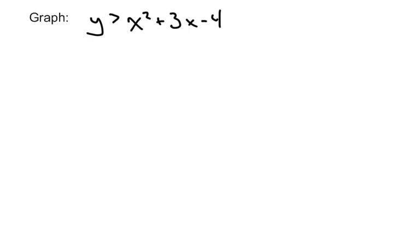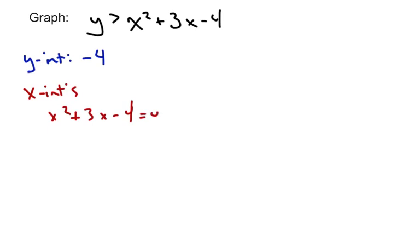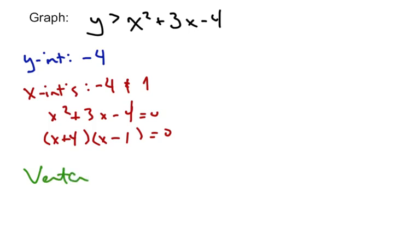One last thing: graphing an inequality. When we have y greater than x squared plus 3x minus 4, we've gone through finding what we need to graph. The y-intercept is obviously negative 4 — when it's in standard form it'll be the constant. To find the x-intercepts, we set x squared plus 3x minus 4 equal to 0 and solve it. This factors nicely into x plus 4 and x minus 1, so the two x-intercepts happen at negative 4 and 1. The vertex is halfway between those, or using x equals negative b over 2a.